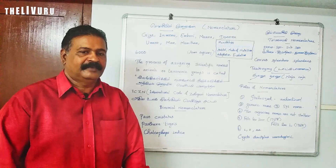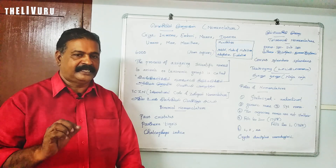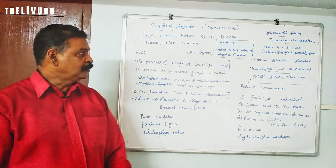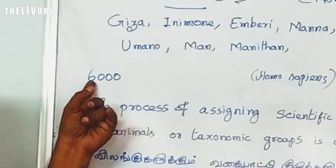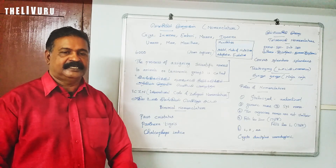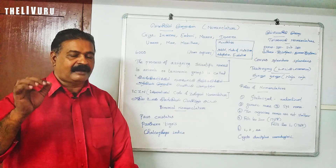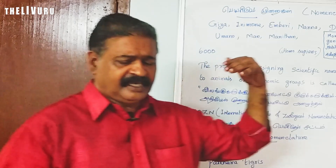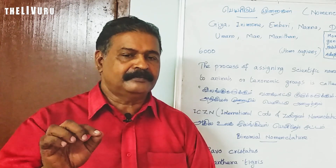Who is a man? In Tamil, we say 'Manishan.' In English, we say 'man.' But in the world, there are 6,000 languages. So for the same organism — man — there can be 6,000 different names across those languages.